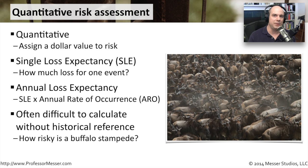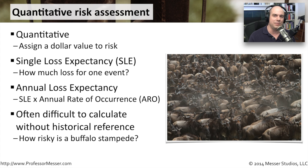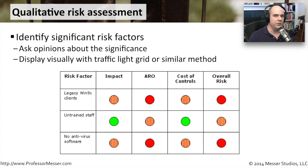But there are things you just can't plan very well for. In this particular case, something like a buffalo stampede — you're not going to calculate an annual loss expectancy for a buffalo stampede if you happen to be in Florida. You run into situations where sometimes you can't exactly put a dollar figure on things because there's no reference and no way to determine if this is something that might have occurred in the past or might even occur in the future.